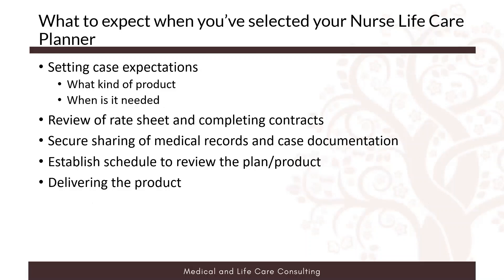When you select your nurse life care planner, setting case expectations is important. On that first phone call, you identify what kind of product you need and we help with that, and establish when it is needed — setting a goal and deadline is very important. We send out rate sheets and contracts, and sharing of medical records and personal information is done securely through Dropbox or a similar service. We also offer encrypted email, and some attorneys prefer sending materials on a disk or zip drive. Once all information is reviewed and summarized, we set up a schedule to review the plan prior to the due date, and the product is delivered on the due date by encrypted email.